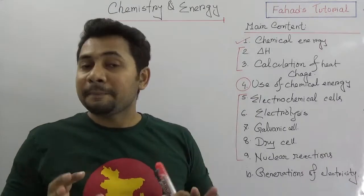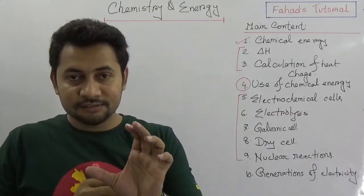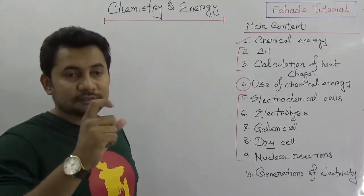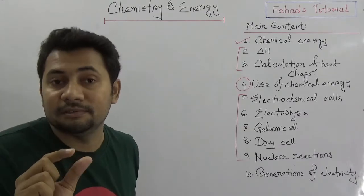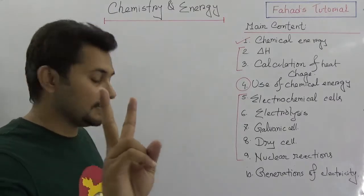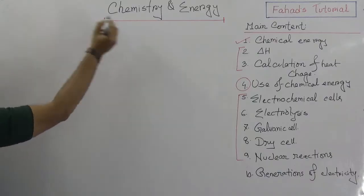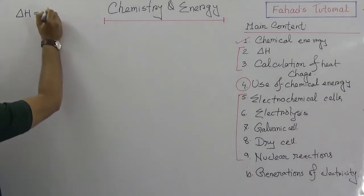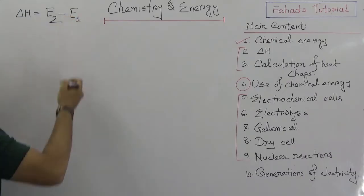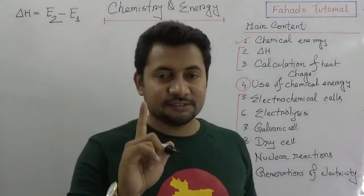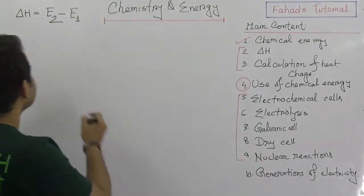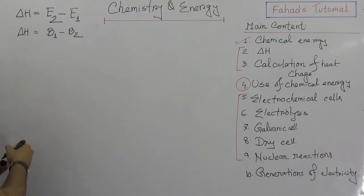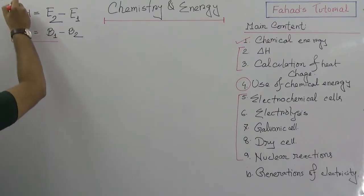This is the first class where I'm focusing on two things: del H and the calculation of heat. In the next video I shall be explaining how to calculate del H when bond energy is given. Before explaining, I'll write two slides. First: del H in terms of internal energy is E2 minus E1. Then del H in terms of bond energy is B1 minus B2. I'm coming up with the idea of why it is formulated this way.